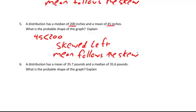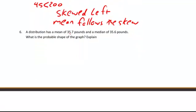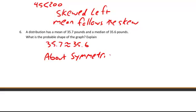This one is at 35.7 and a median of 35.6. What is the probable shape? 35.7 is approximately the same as 35.6, so this is probably going to be about symmetric. And the reason is because 35.6 and 35.7 are about the same. And that's it.